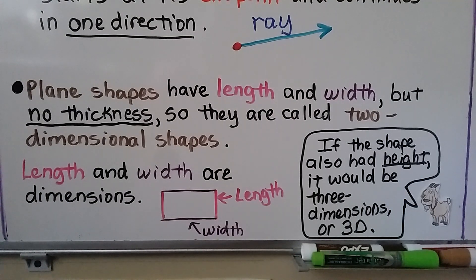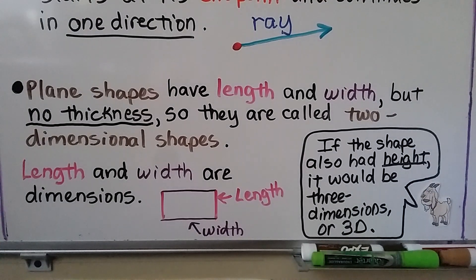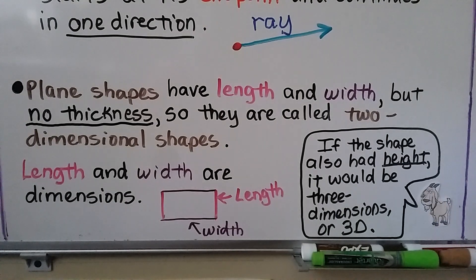If the shape also had height — so it had length, width, height — that would be three dimensions, that would be 3D. Like a 3D movie where when you wear the glasses, it feels like the image is coming towards you. It's not just flat on the movie screen; it has a third dimension where it feels like it's coming towards you, so it has depth.